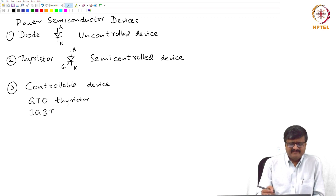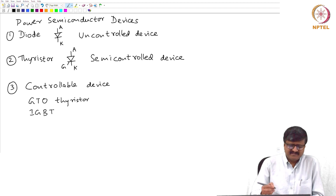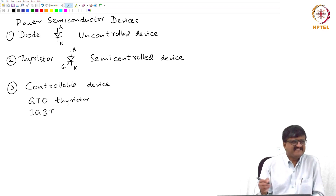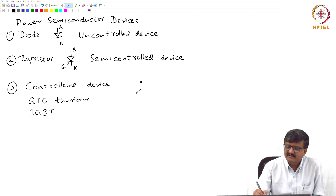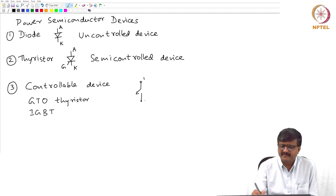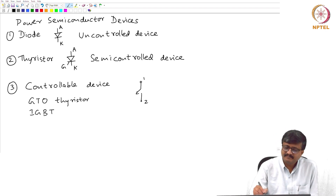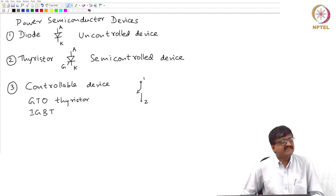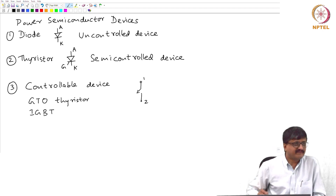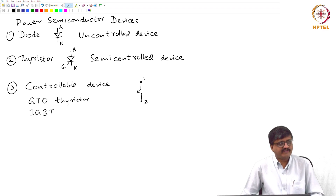Since there are two examples — and commercially a few more available — I will not list all of them. What I will do is use a very general symbol: a switch with an arrow on two terminals, say terminal 1 and terminal 2. The arrow on the switch means that whenever the device is on, the current is always flowing in one direction from 1 to 2, and when the device is off there is no current flow. I am not showing the control terminal, though there will be one.